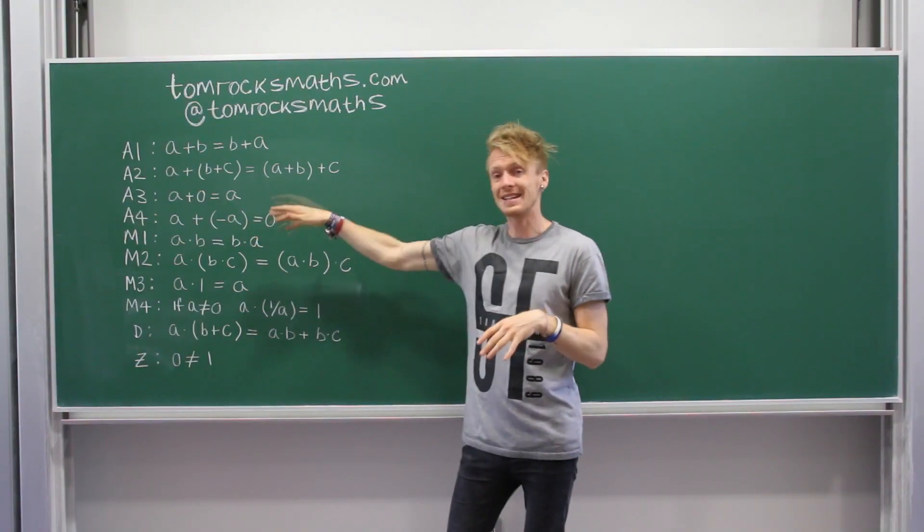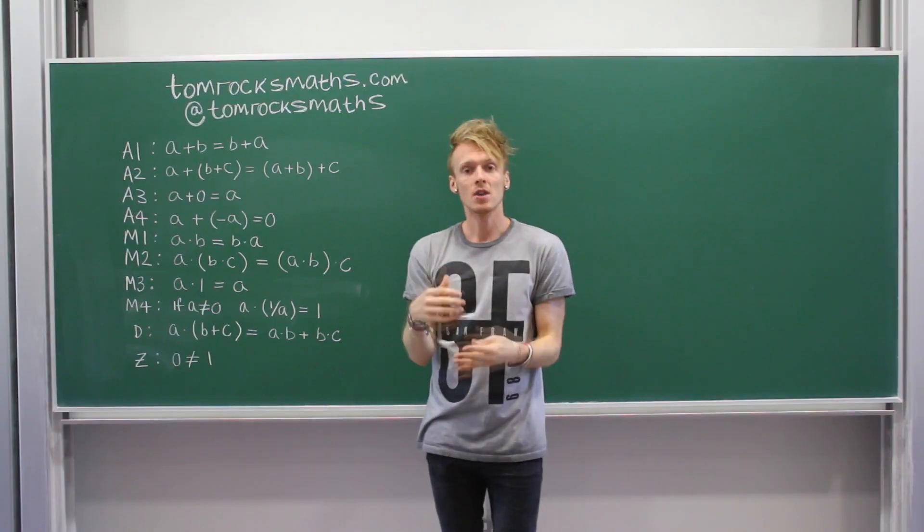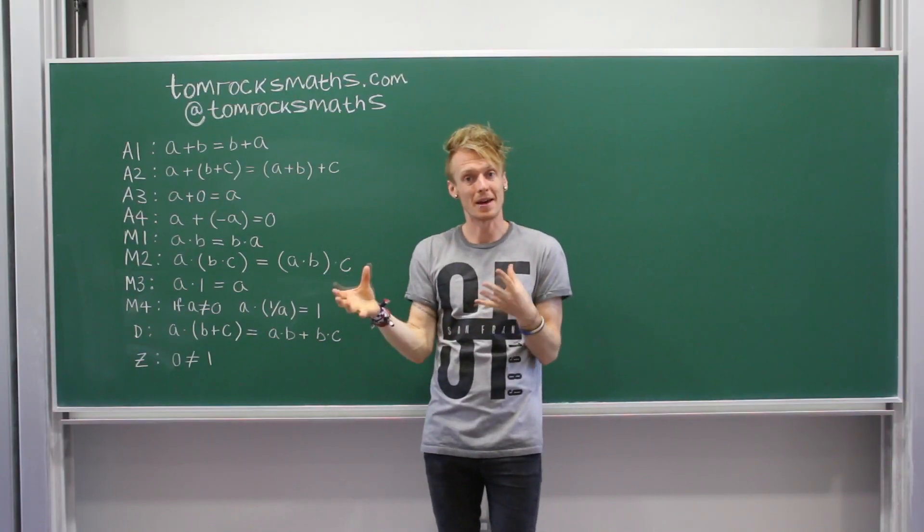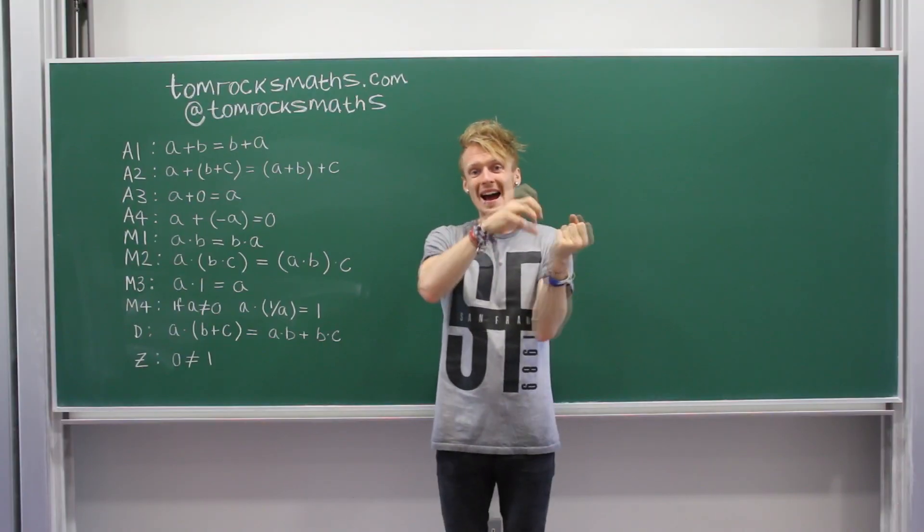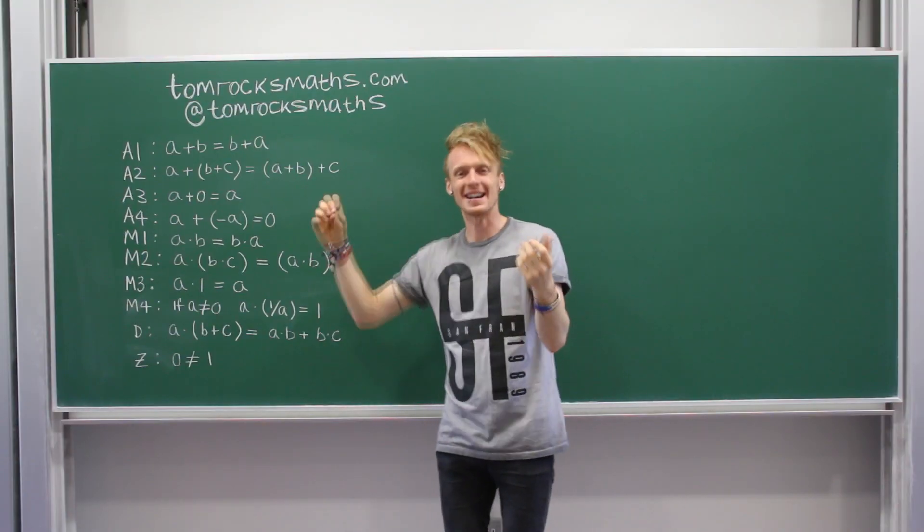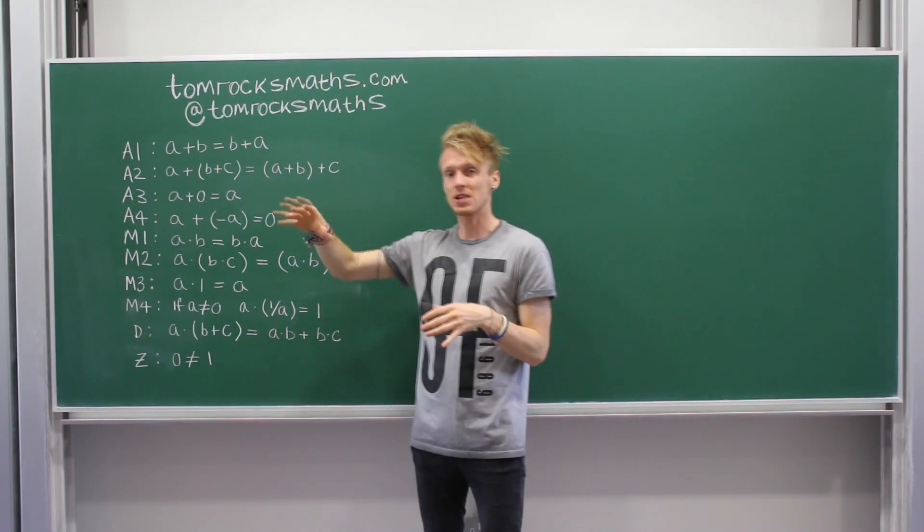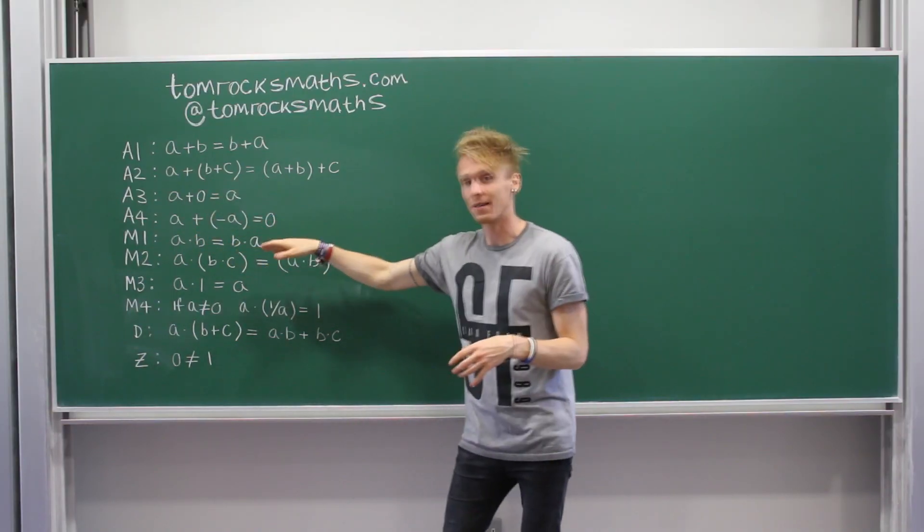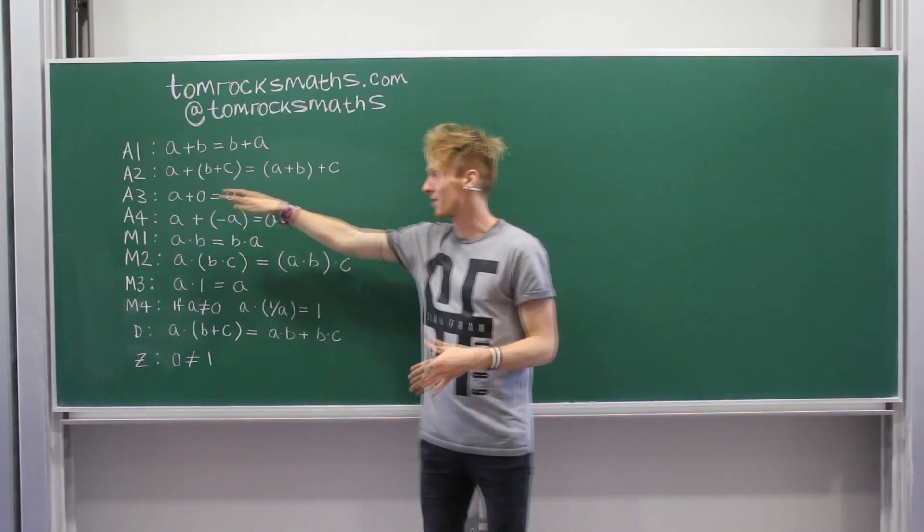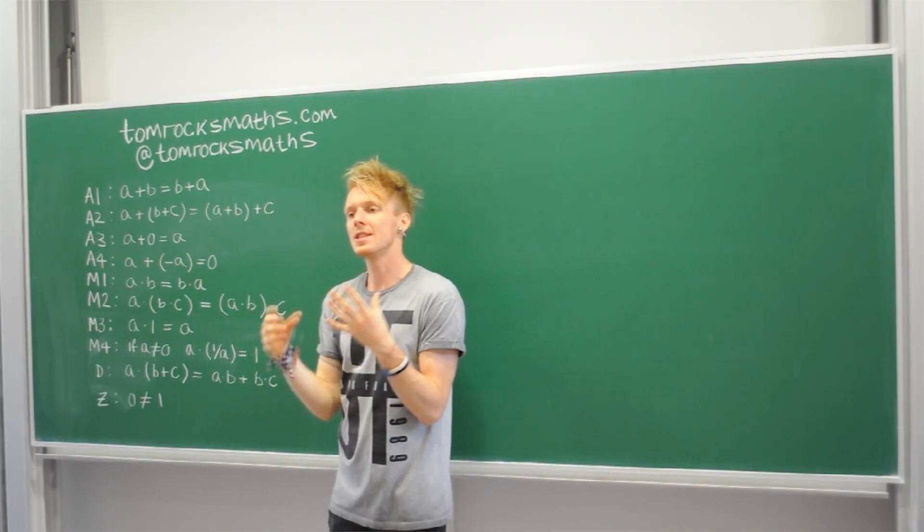And then A4 is defining inverses. So the definition of an inverse, mathematically, is you have a number, you add its inverse, you should get the identity. So here you have A, you add minus A, and you get back to zero, which is the identity by the third rule.